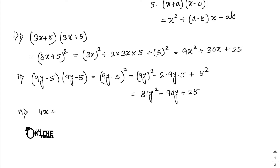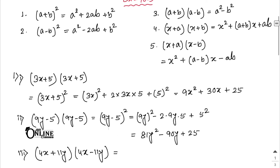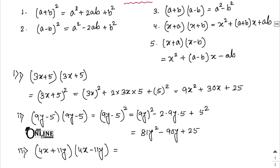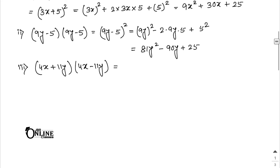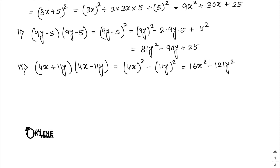Number 3: (4x + 11y)(4x - 11y). Apply the third identity (a + b)(a - b) = a² - b². The answer is 16x² - 121y².